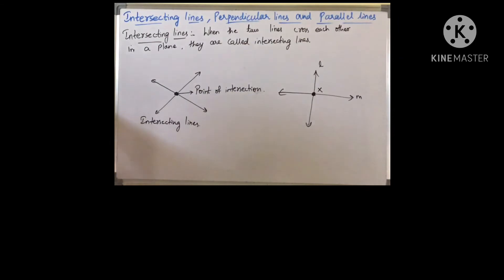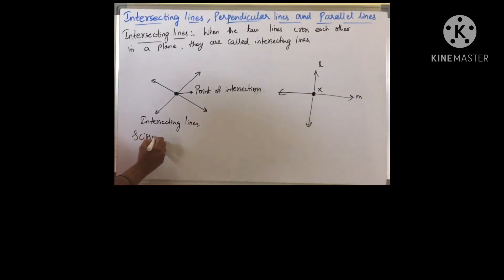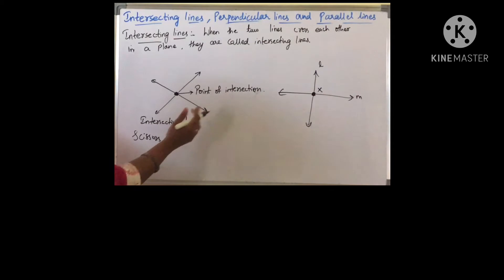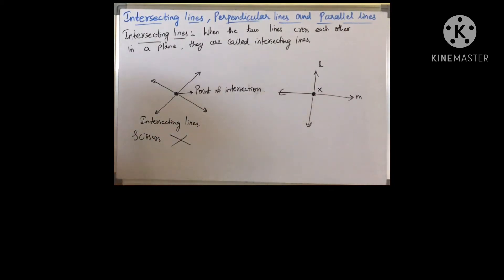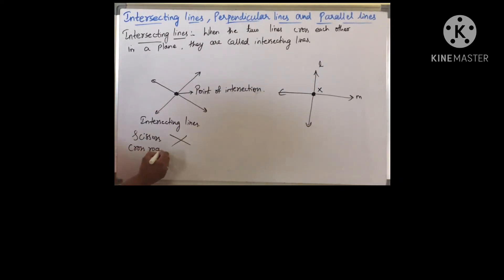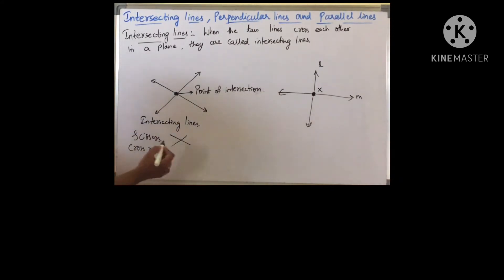The two arms of scissors form intersecting lines. And crossroads — two roads meet at a common point, making a crossroads.